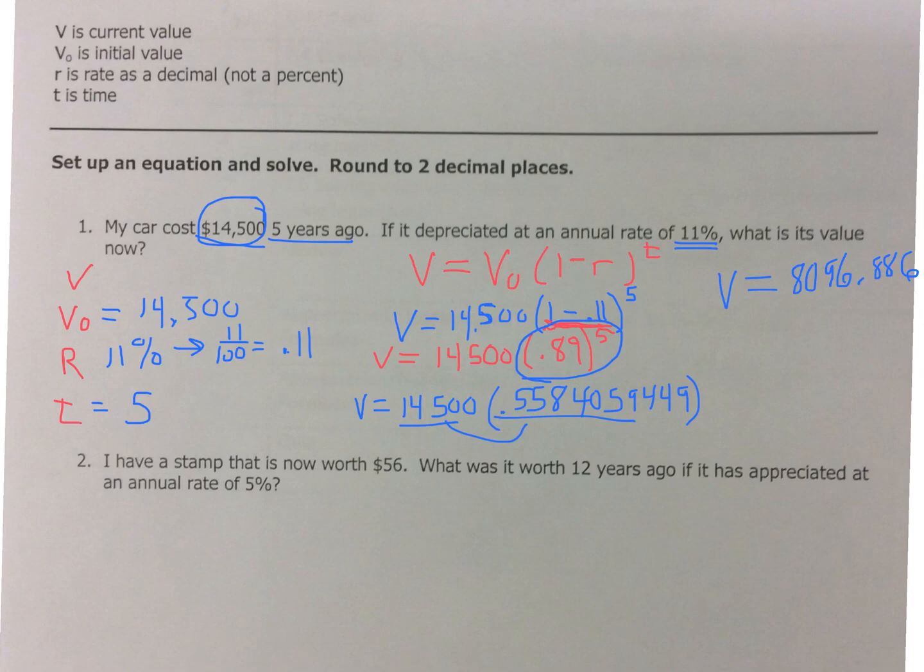Now, realize we're dealing with money. So we're going to round this to two places. So you're looking at $8,096.89. So that is what my car is worth five years after I originally bought it at 14,500, and it depreciated at 11%.